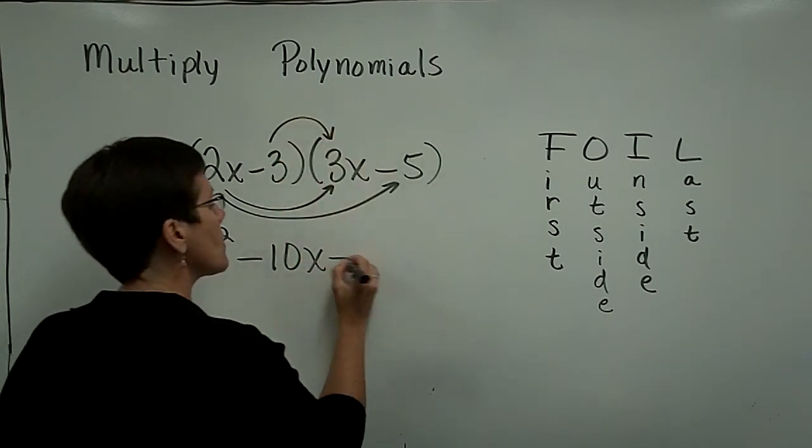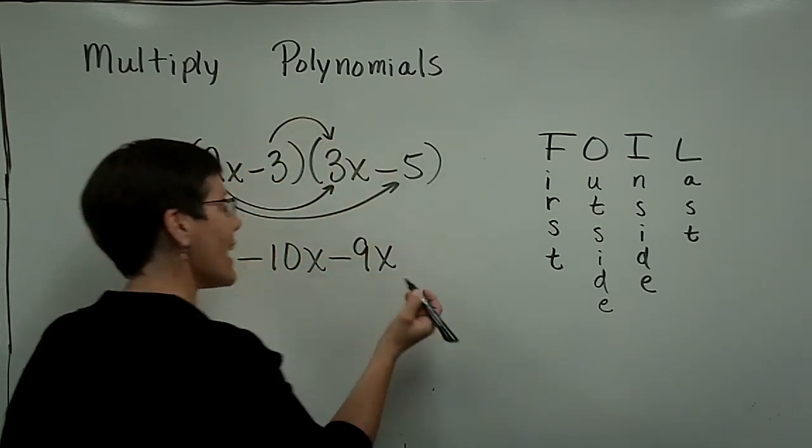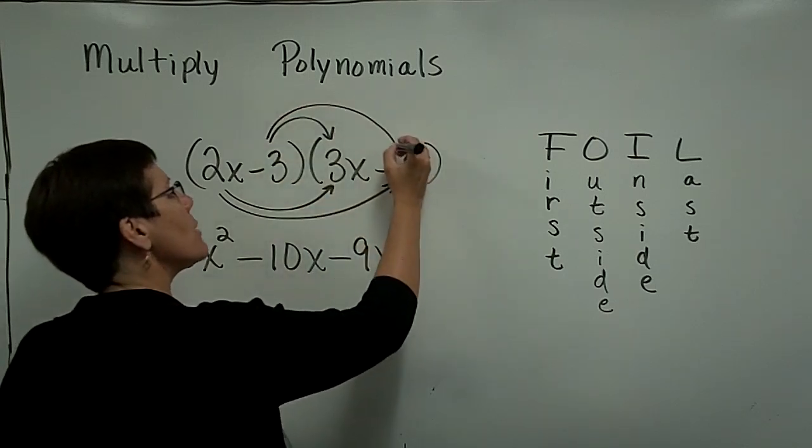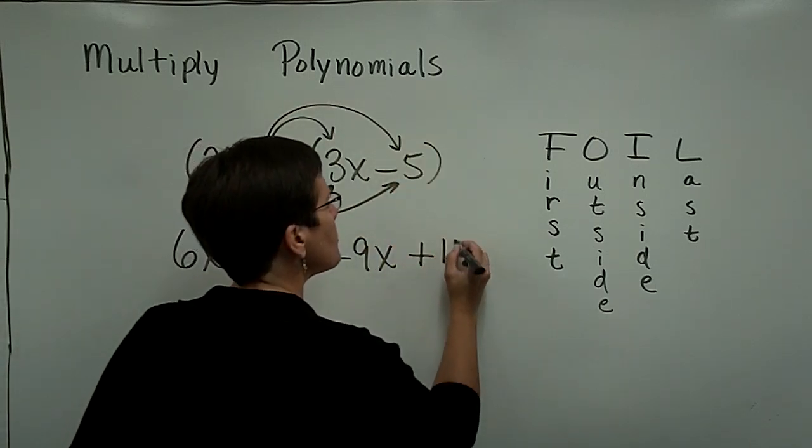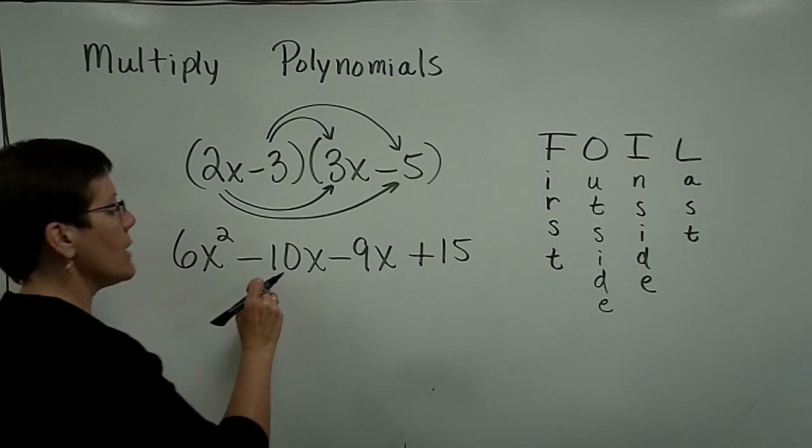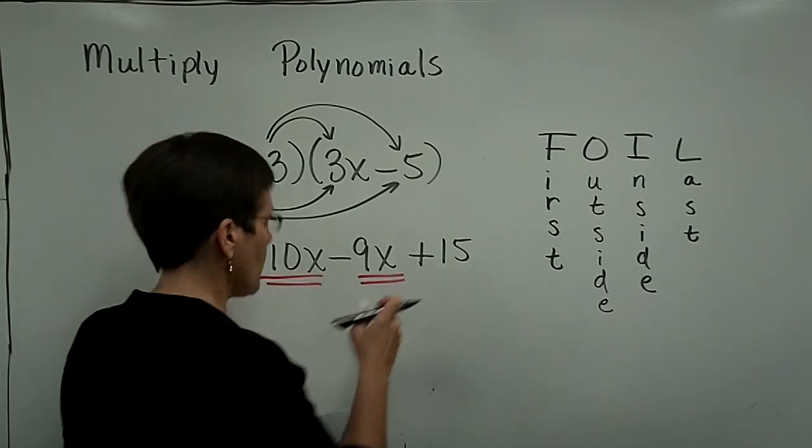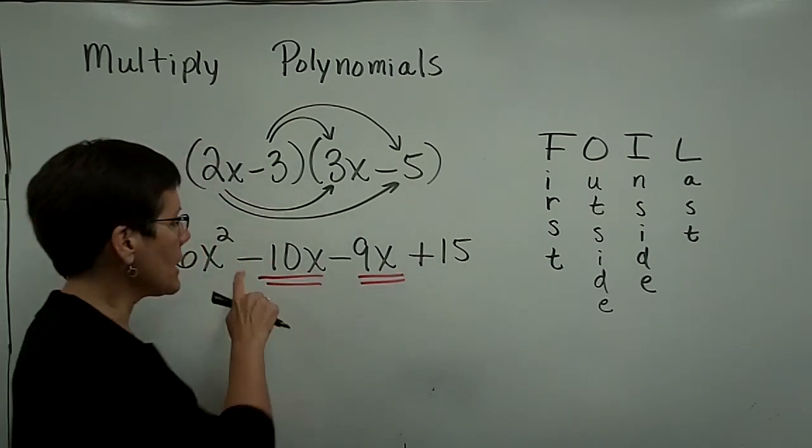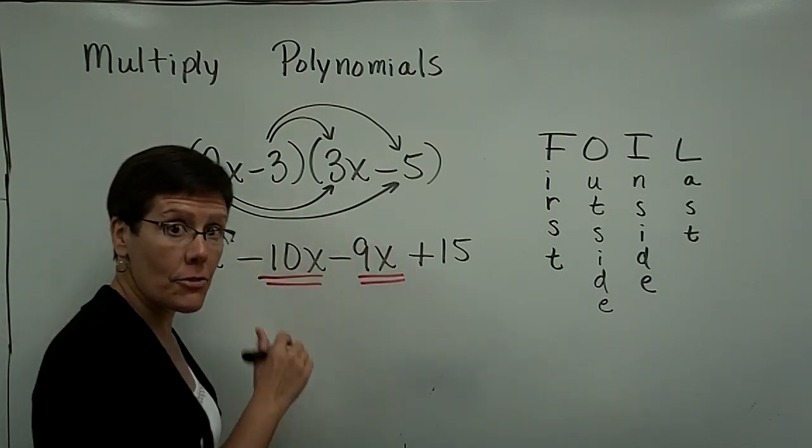2x times a minus 5 is a minus 10x. A negative 3 times 3 is a negative 9x. And this negative times a negative is a positive 15. And finally, I'll collect these two like terms. And I'm adding two negative numbers. I'm adding a negative 10 and I'm adding a negative 9.